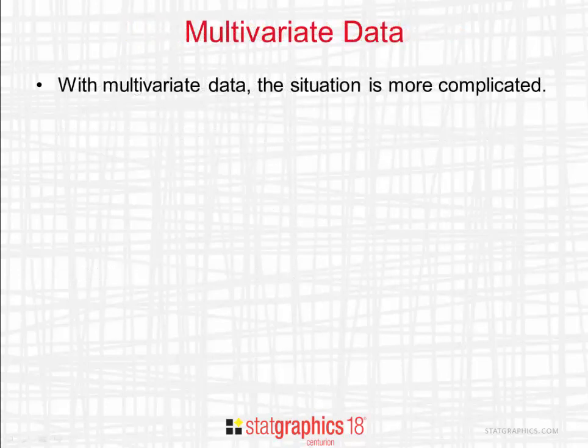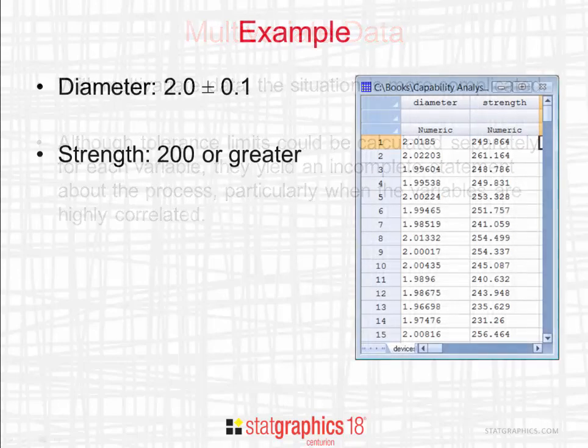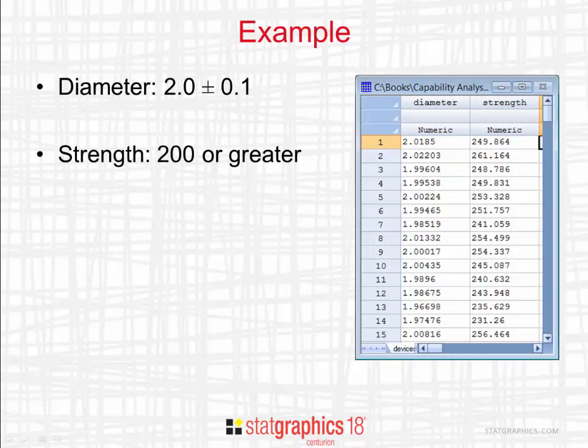With multivariate data, the situation is more complicated. Although we could construct tolerance limits separately for each of the variables, that would yield an incomplete statement about the process, particularly when the variables are highly correlated.